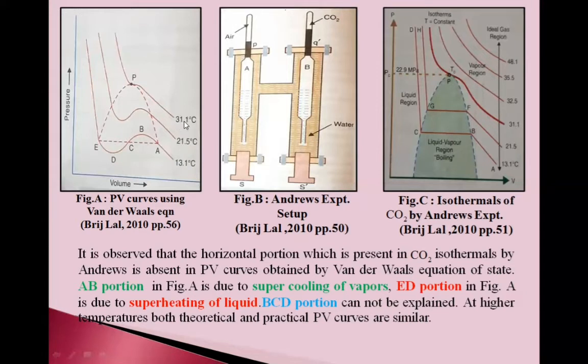But at 31.1 degrees Celsius, the curve is quite different. There is only one point. This portion is minimized, converted to only one point. From Figure C, A to B is gaseous state. At B, the gas starts liquefying. From B to C, the gas is converting to liquid. This portion shows liquid and vapor mixture. At C, the vapor is completely liquefied and along CD is liquid region.